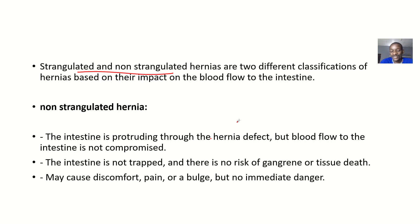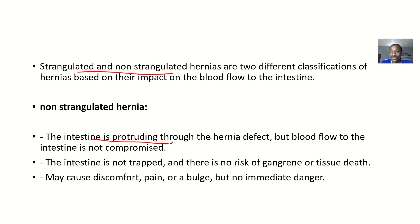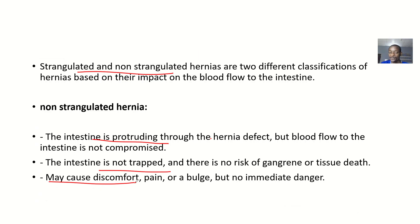This classification of hernia is based on the impact on blood flow to the intestine. For the non-strangulated hernia, the intestine is protruded through the hernia defect but blood flow to the intestine is not compromised. The intestine is not trapped and there's no risk of gangrene or tissue death. It may cause discomfort, pain, and bulging, but there's no immediate danger because the blood supply is still maintained.